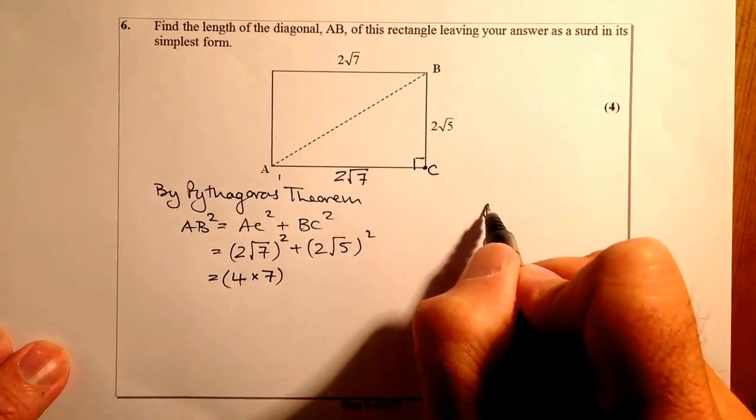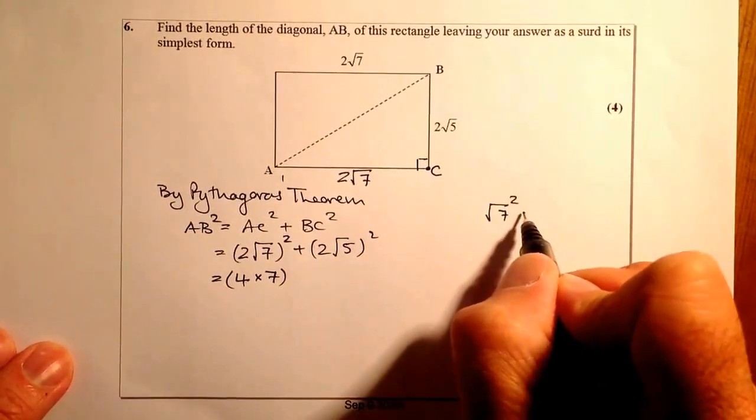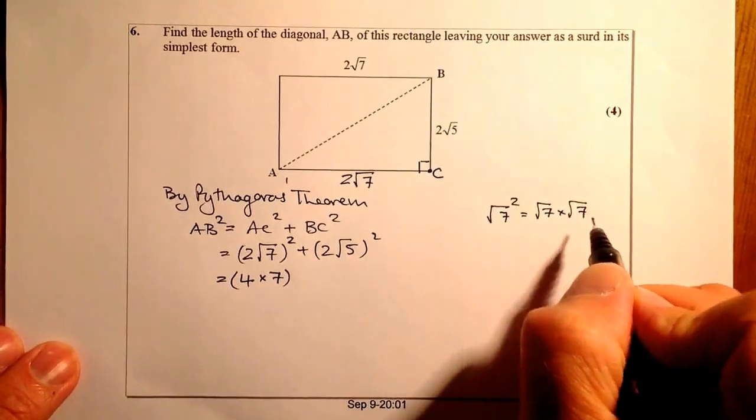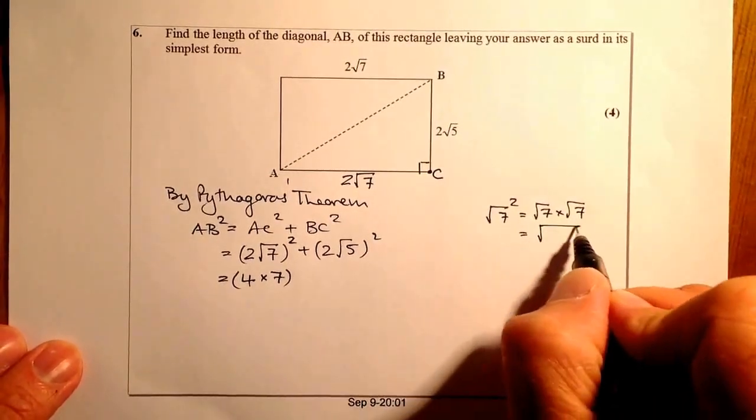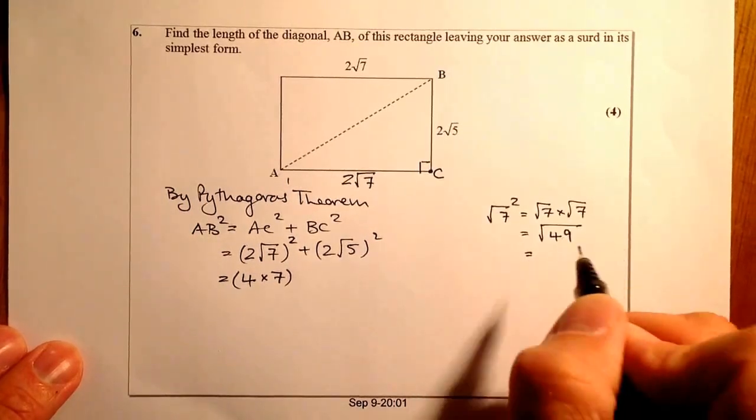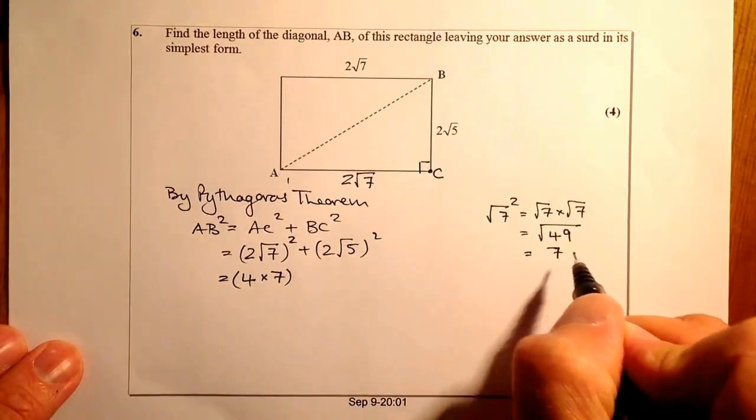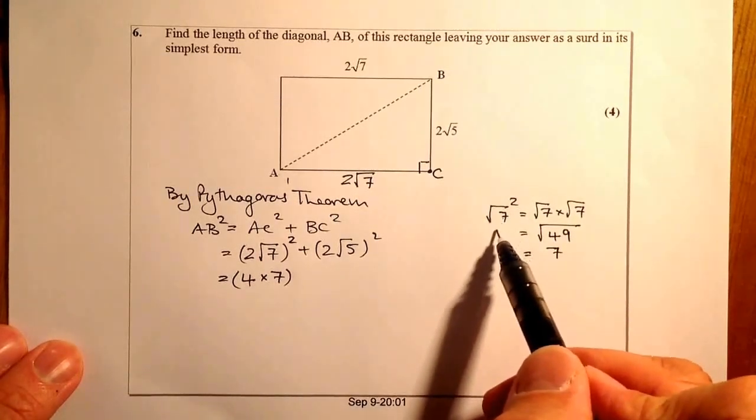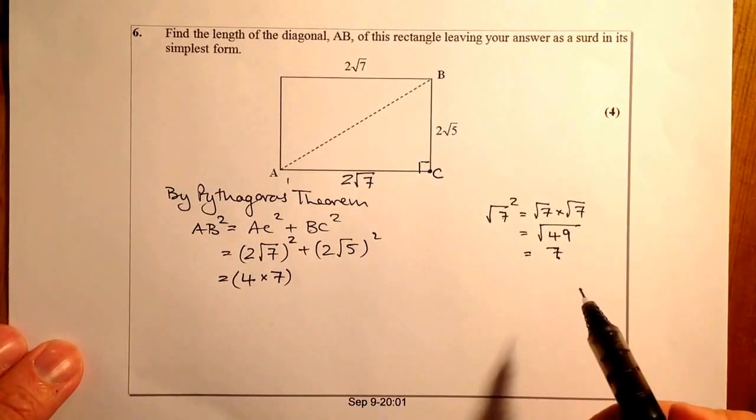And if I do it in a kind of longhand version, that'll be square root 49. And I know that the square root of 49 is 7. So if I know that I've got √7 squared, I know I can go straight to 7 for that one.